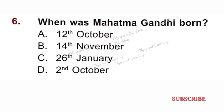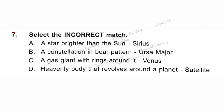Question No. 6: When was Mahatma Gandhi born? Option D is correct — 2nd October 1869. Question No. 7: Select the incorrect match. Option A — a star is brighter than the sun — this is a correct statement. Option B — a constellation in a bear pattern, Ursa Major — also correct. Option C — a gas giant with rings around it — but Venus is a rocky planet and does not have any rings, so Option C is incorrect. Since we need the incorrect statement, option C is the answer. Option D — a heavenly body that revolves around a planet is a satellite — this is also correct.